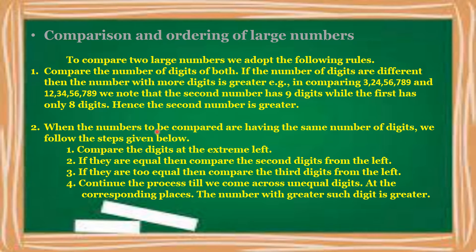Rule 2: when the numbers to be compared have the same number of digits, we follow these steps. First, compare the digits at the extreme left. If they are equal, compare the second digit from the left. If those are also equal, compare the third digit from the left. Continue this process until we find unequal digits. The number with the greater such digit is greater.